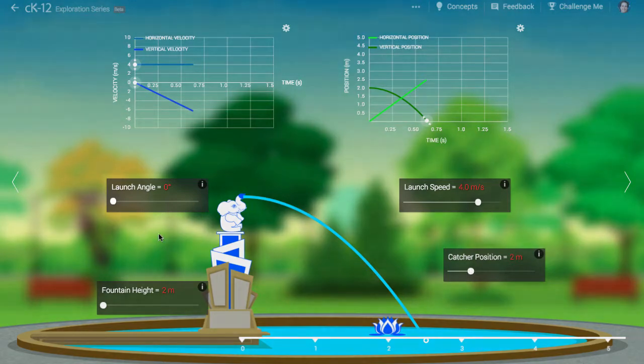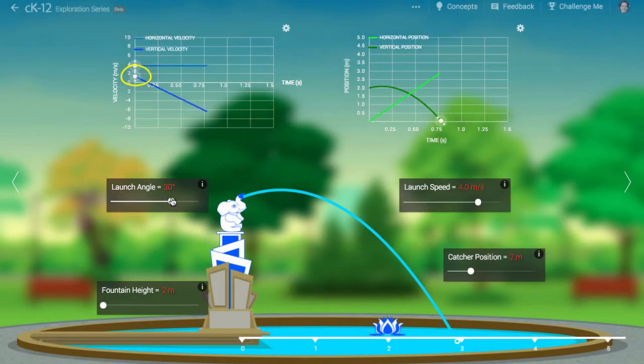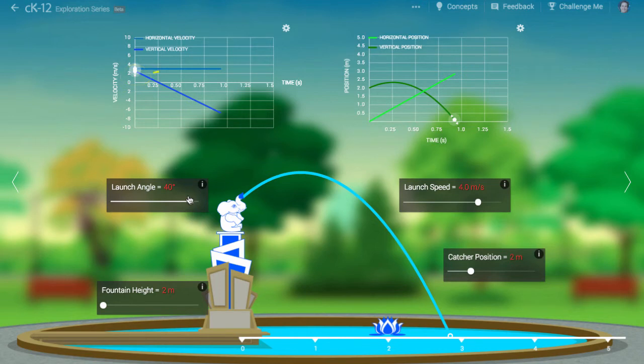What happens when we increase the launch angle from 0 degrees to something larger? Well, now the initial vertical velocity component is no longer 0. It has some value. This quickly decreases to 0 and then becomes negative as the water goes up, then comes down.